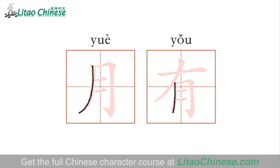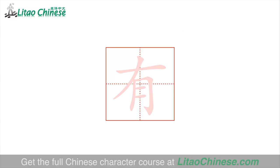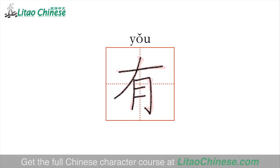There are some small changes between characters standing alone and when they become one part of other characters. You will find more examples in our future lessons. Let's write the character 有 stroke by stroke again: 横, 撇, 竖, 横, 横, 横. 有, to have or to own.